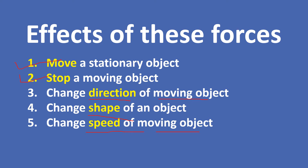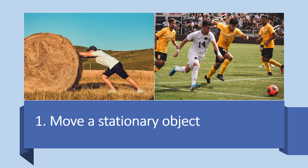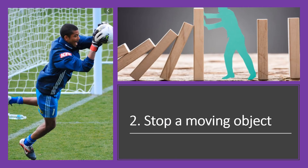This is an example of force moving a stationary object — the man pushes this roll and it moves away. When we kick a ball, the ball moves away. This is an example of force stopping a moving object — the goalkeeper stops the moving ball, and in the second picture a man stops a falling object.